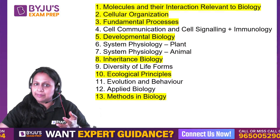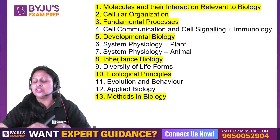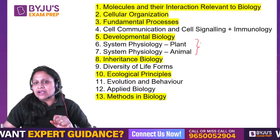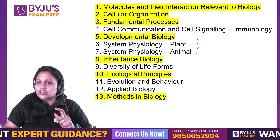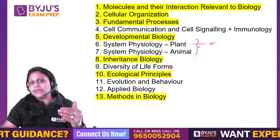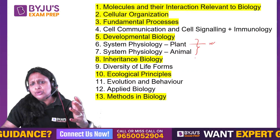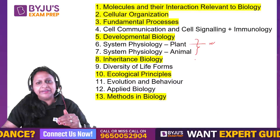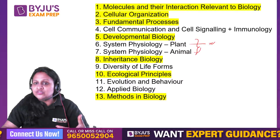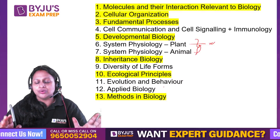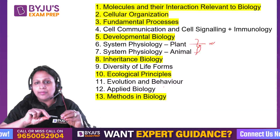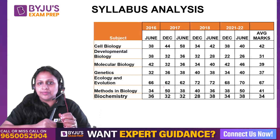Basic concepts and development are also important, and they are marks-fetching areas. Regarding animal physiology and plant physiology, plant physiology has more questions marks-wise compared to animal physiology. If you are a zoology student who also wants to study plant physiology, you can go with that unit, but since most people don't opt for it, I have not included it in the primary 7.